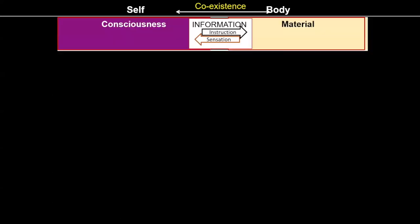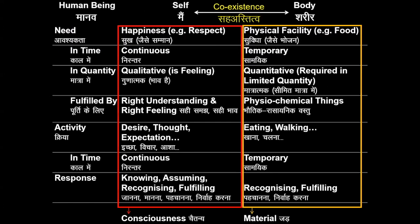In this exercise 2, we are trying to observe the self, the body, and the interaction between the two. Basically, I am trying to observe my activities, activities of the body, and the interaction taking place between the two.